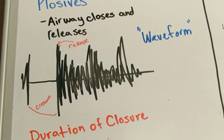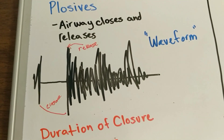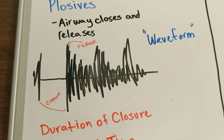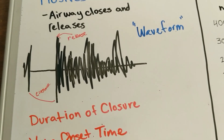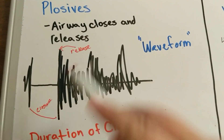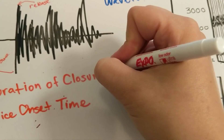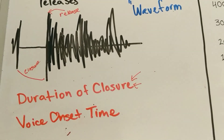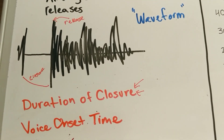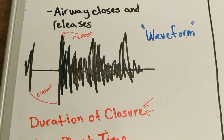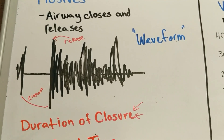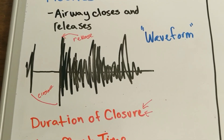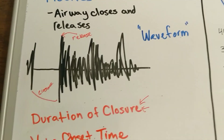So when you make the sound 'ta', you have a temporary closure that's really quite short — 'ta' — and then the T sound, that sort of puffy sound, is where you get the release. So the closure and the release. The duration of the closure is something that can vary between consonants of different types and consonants in different languages. So a child who's learning to use and understand plosives thinks about how long was that closure.